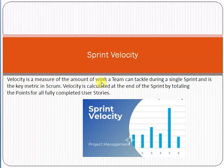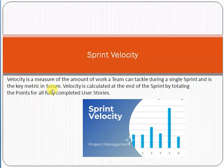Sprint is a three to four week time period and is the key metric in Scrum — a framework for project management that we use for managing software projects. Velocity is calculated at the end of the sprint by totaling the points for all fully completed user stories.